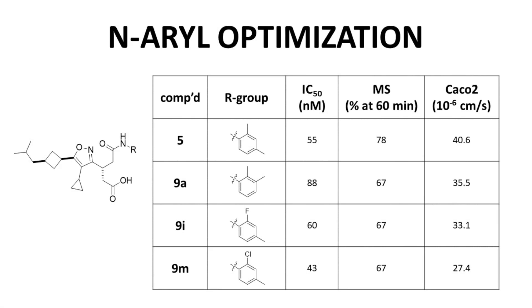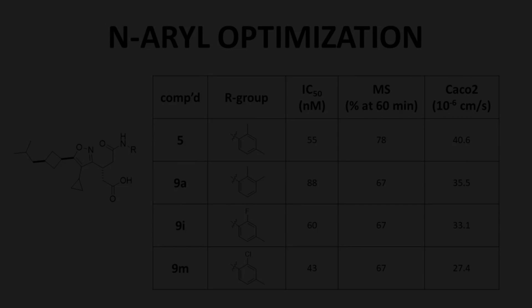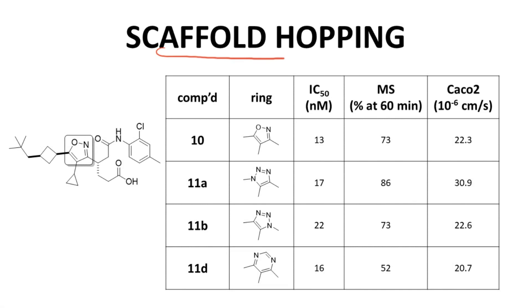The last group examined was the N-aryl ring. Almost none of the different substitution patterns improved potency. One of the very few improvements was compound 9M, which is barely a change from compound 5 — just an isosteric substitution of the ortho-methyl with an ortho-chloro. The potency gain is modest, with some loss of metabolic stability and permeability. With optimized R-groups for three parts of the compound, the researchers then turned attention to the isoxazole core in a scaffold hopping exercise.